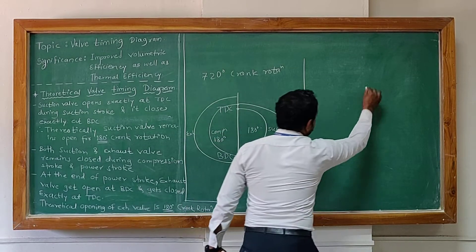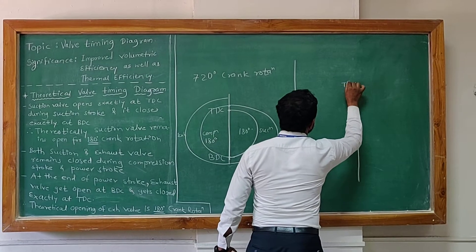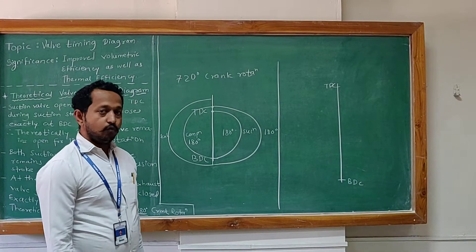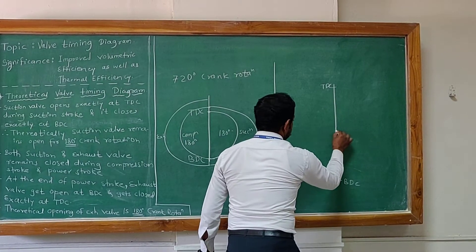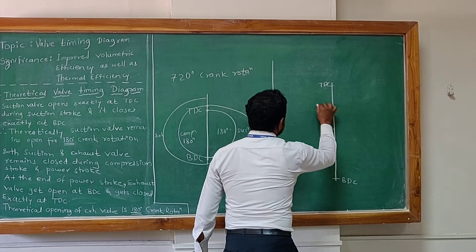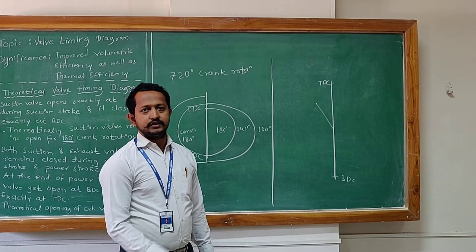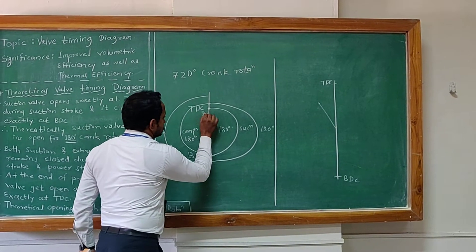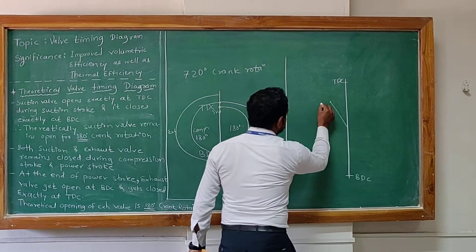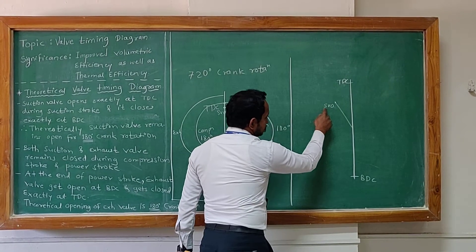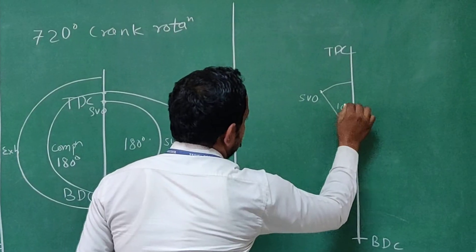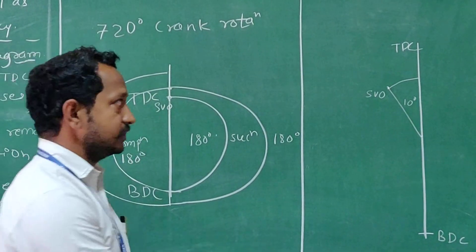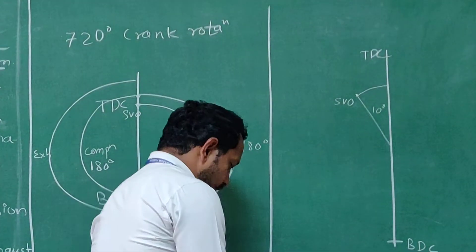Again I will mark the TDC position and the BDC position. And here you will find the valves. I will start marking. Initially, the inlet valve opens just before TDC. As compared to the theoretical diagram, if you see, the suction valve opens at TDC. Here it will open just before TDC. So I will mark suction valve opening just before TDC. It is around 10 degrees before TDC.